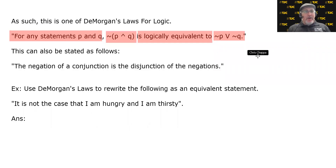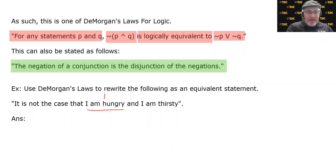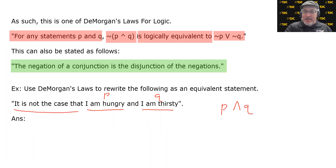So let's pick it up from here. One of DeMorgan's Laws for logic says the negation of a conjunction is the disjunction of the negations. Let's use DeMorgan's Law to rewrite the following as an equivalent statement: 'It is not the case that I am hungry and I am thirsty.' Let P be 'I am hungry' and Q be 'I am thirsty.' There's an 'and,' so that's a conjunction — P and Q — all preceded by 'it is not the case that,' which is the buzz phrase for the negation of a compound statement.